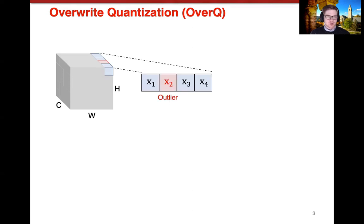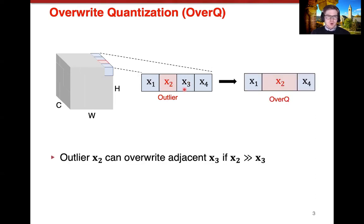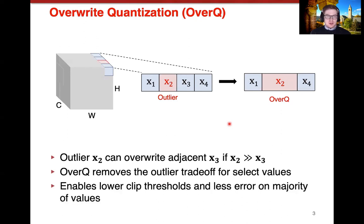So to address this trade-off, we introduce overwrite quantization, overQ. This is a standard activation volume from any convolutional layer. We run overQ over the channel dimension. In this case, x2 is an outlier and x3 is relatively small, so this could be a zero or some small non-zero value. x2 overwrites x3 if x2 is relatively large compared to x3. By overwriting x3, x2 takes on the bit width that was previously allocated to x3. OverQ removes the outlier trade-off for these values that it is performed on. This enables lower clip thresholds because you could push to lower clip thresholds without actually incurring the extra error that you normally would on the outliers.